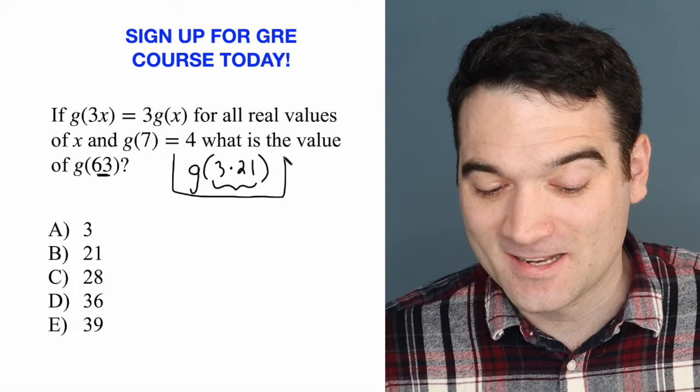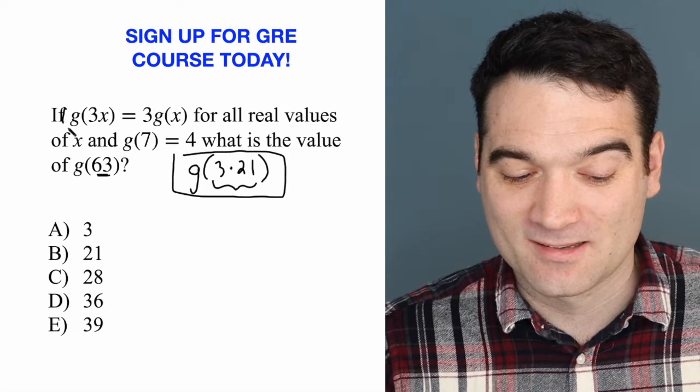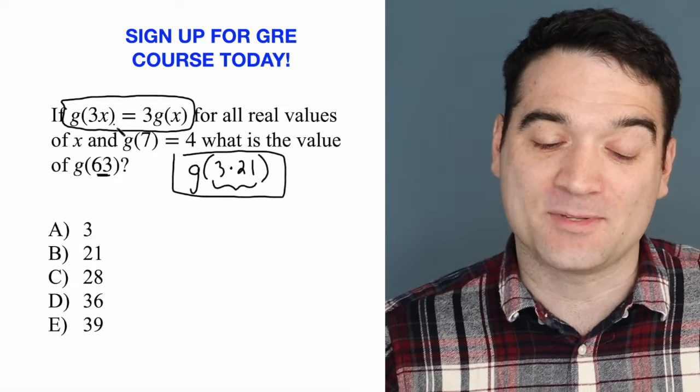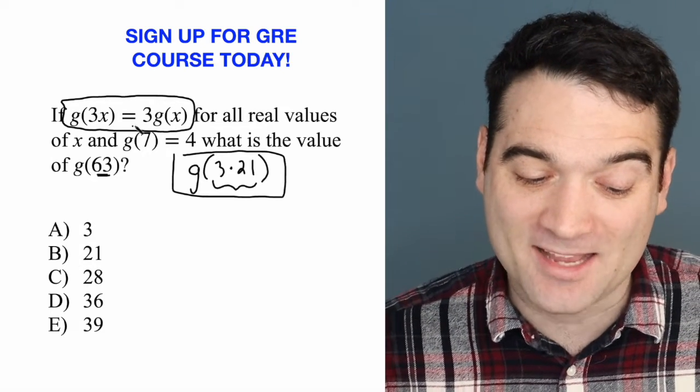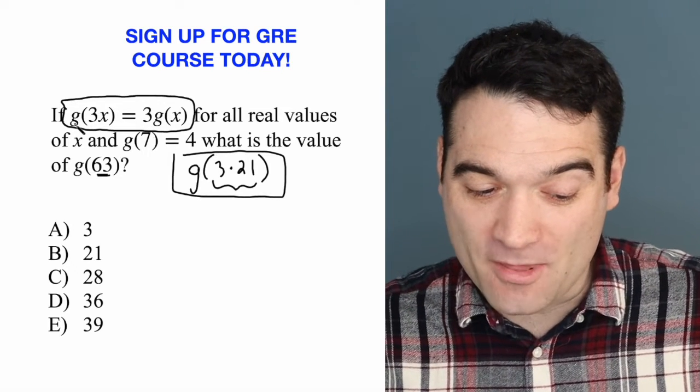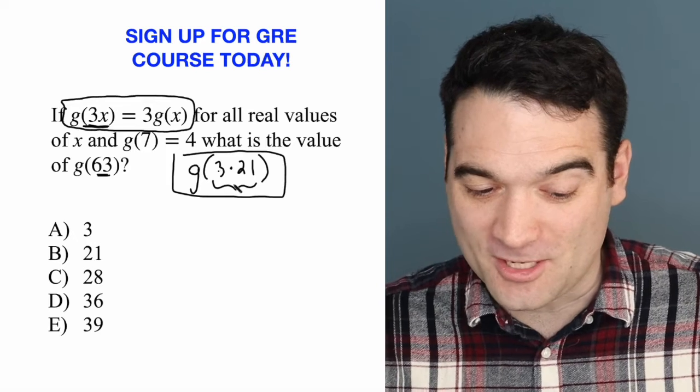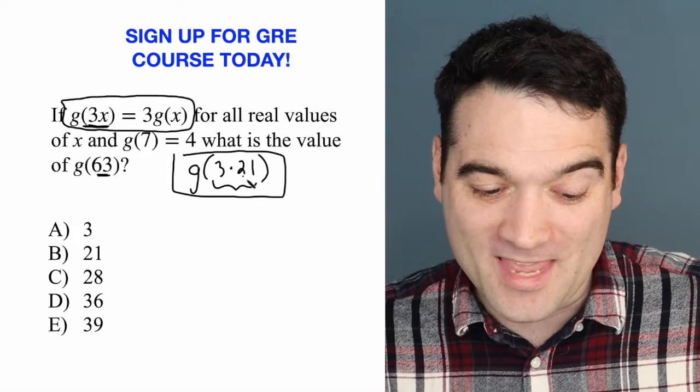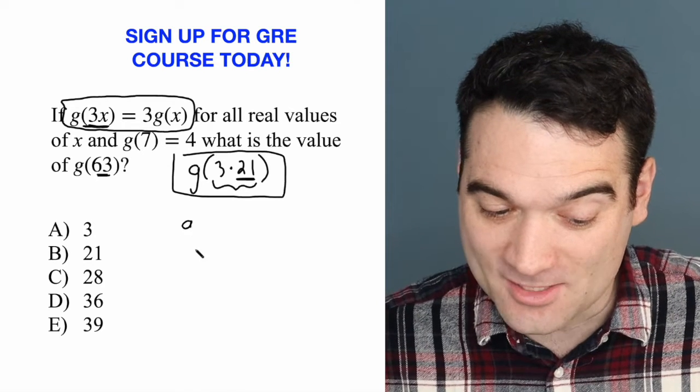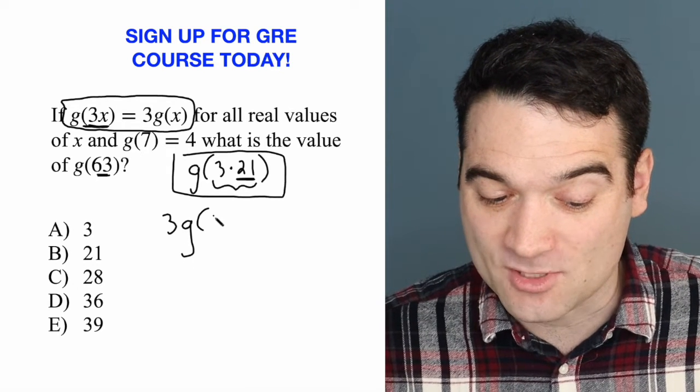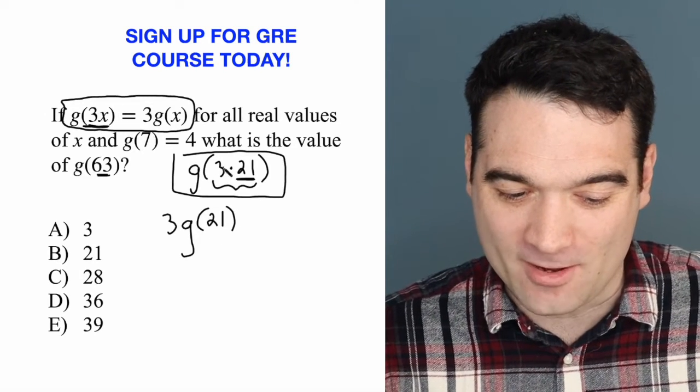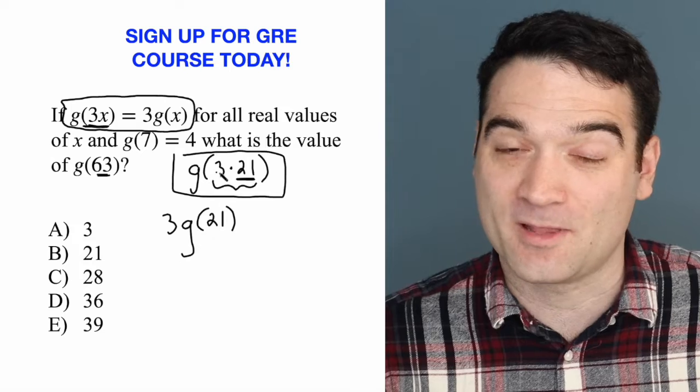But look at this, and now look at this. We know that g of 3 times x is the same thing as 3 times g of x. So if I match this function notation here with this, the x would be 21. And this means that I can rewrite this as 3 times g of 21. Take a minute to look at these two and make sure you understand how that's the same thing.